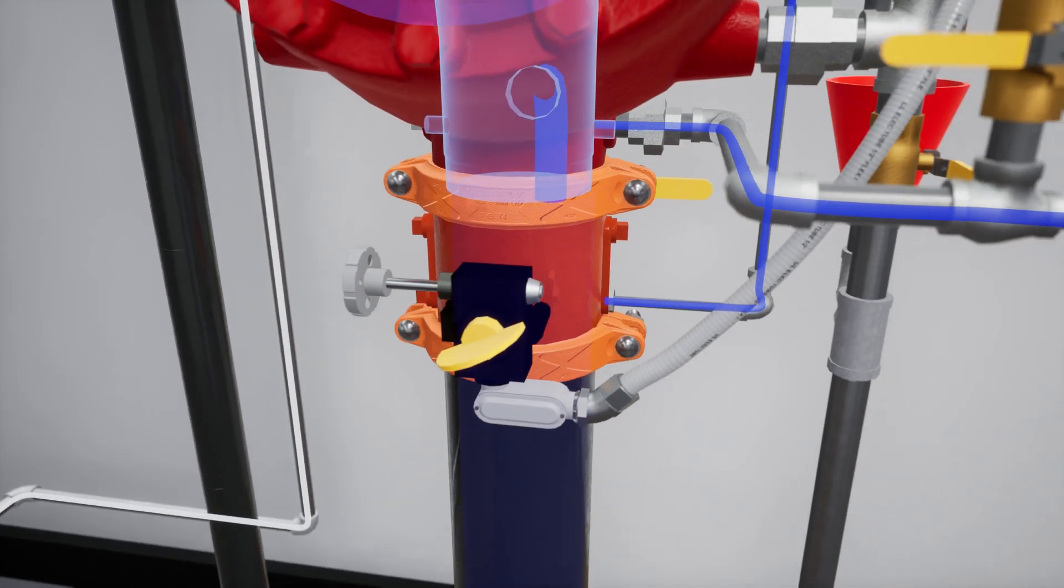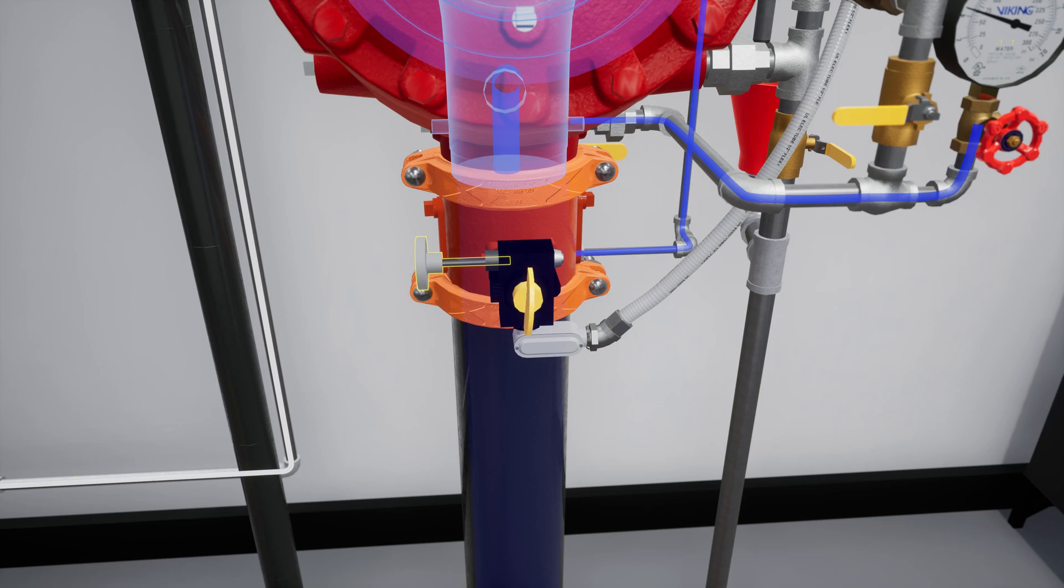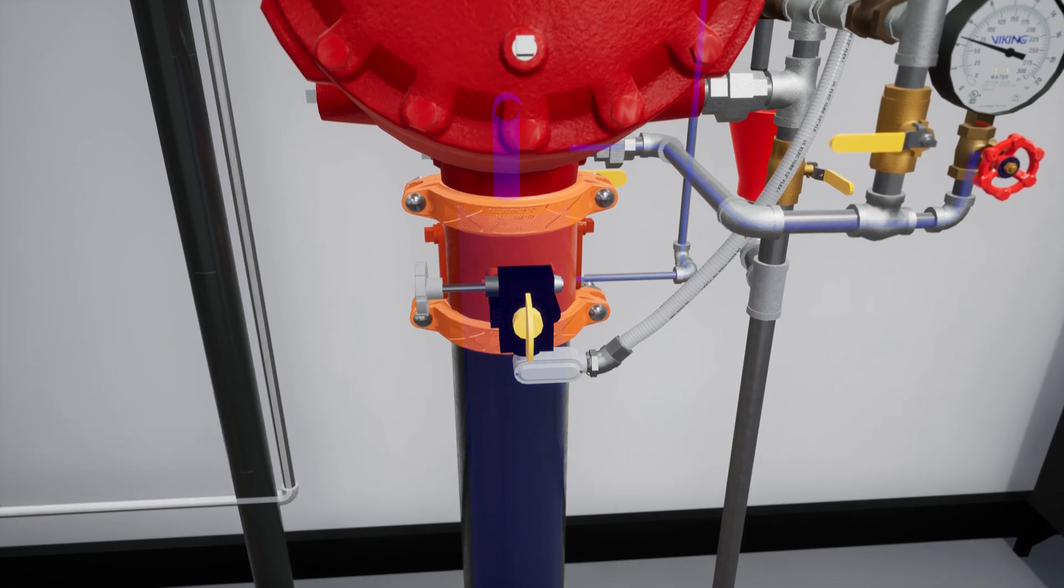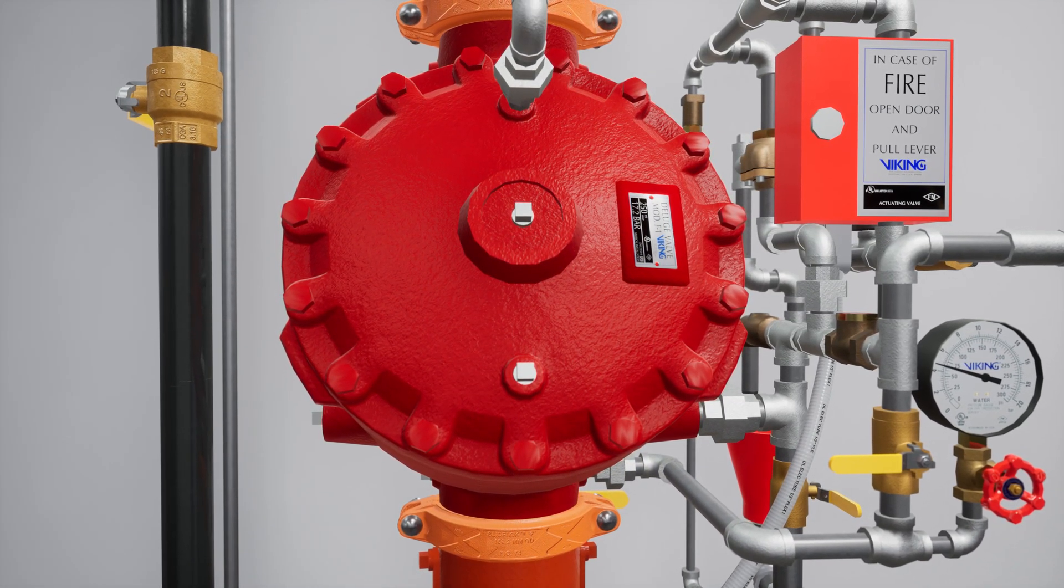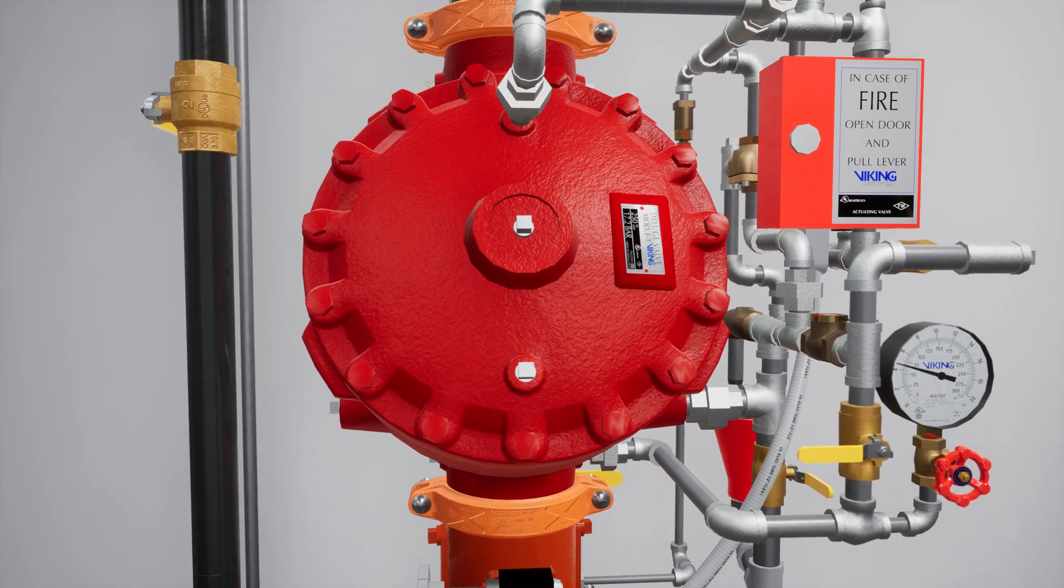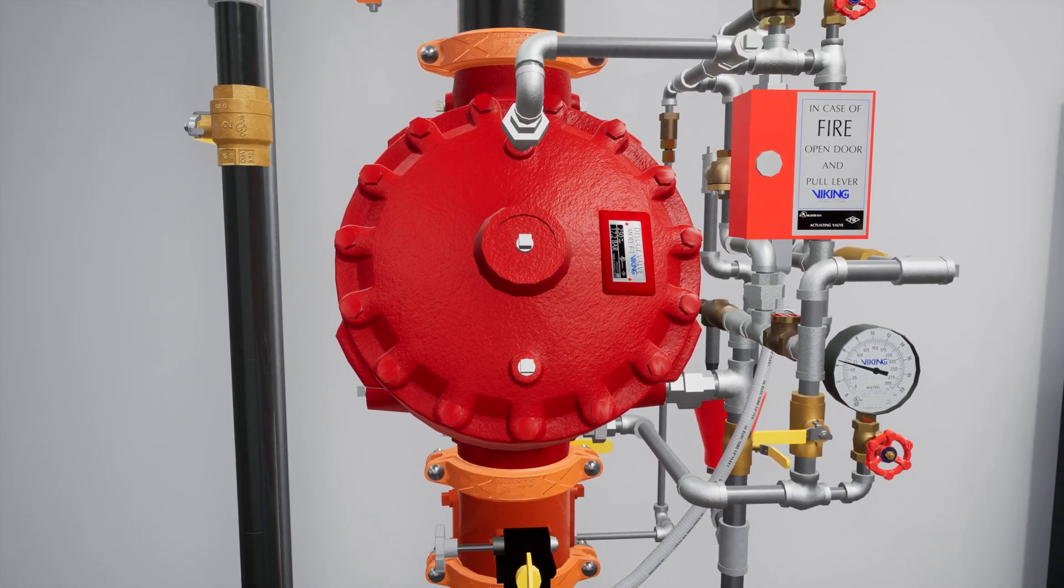Now fully open the water supply control valve. After the system water pressure is restored, any alarm panels that were activated will need to be reset to clear any active alarms.